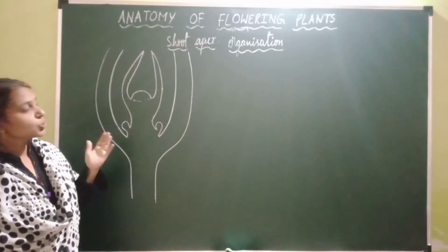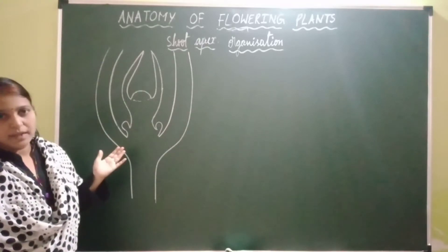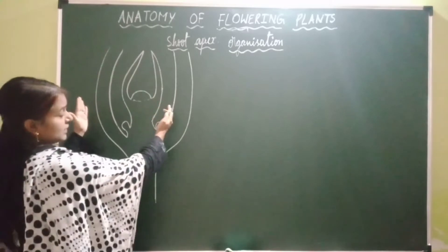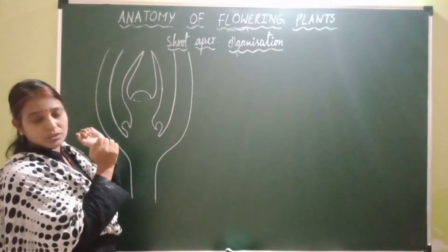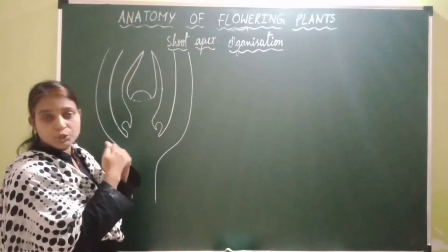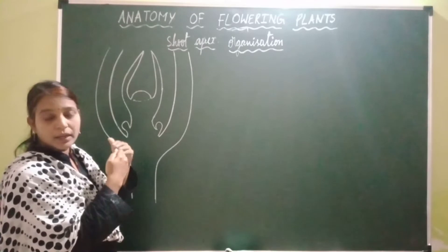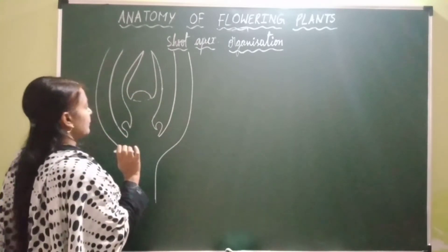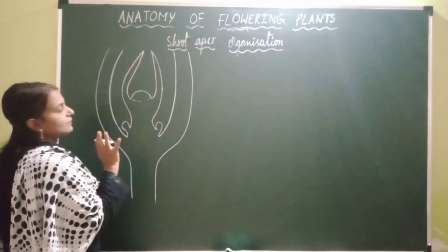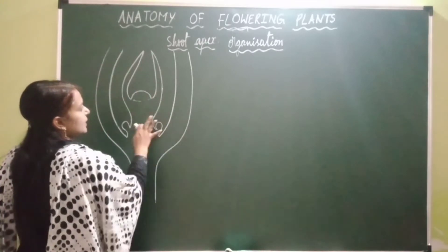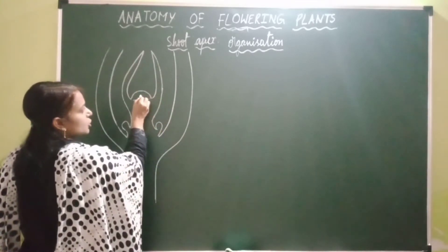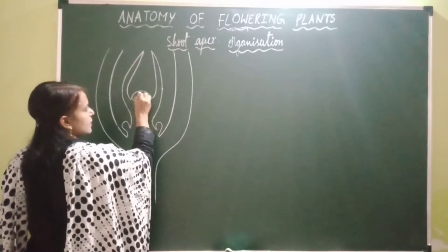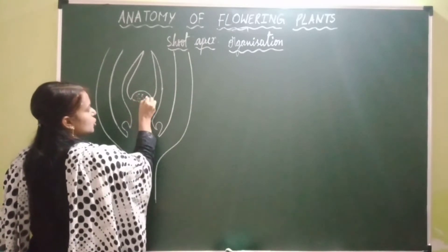Let's start with shoot apex organization — how the tissues are organized at the shoot apex. This is the shoot apex, and this part is the shoot apical meristem.